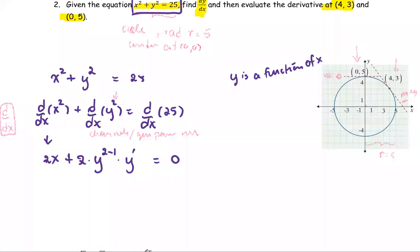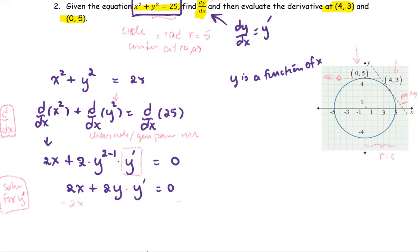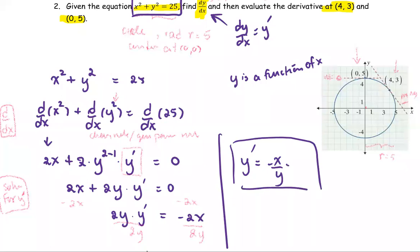Now we have found the derivative of each term. To finish the problem, our goal is to find dy/dx, which is the same as y prime. To solve for y prime, we leave it alone and move other terms to the other side. Right now we have 2x plus 2y times y prime equals 0. Subtract both sides by 2x to get 2y times y prime equals negative 2x, then divide both sides by 2y.